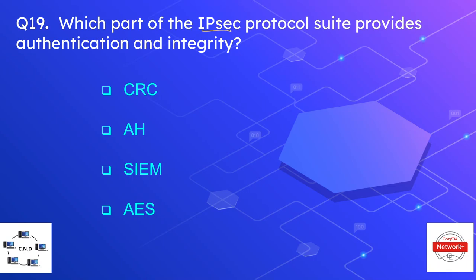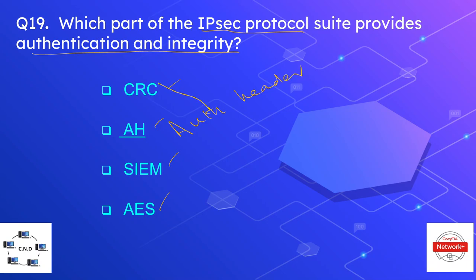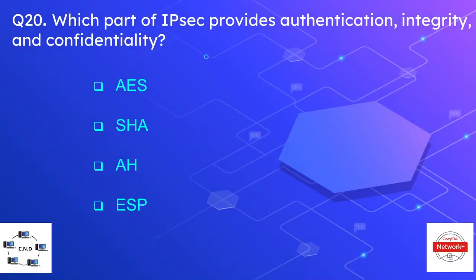Question number nineteen is: which part of the IPsec protocol suite provides authentication and integrity? The options are CRC and AH. The correct option is AH — Authentication Header. As the name indicates, AH provides authentication as well as integrity. IPsec is used for VPN connections over the internet.